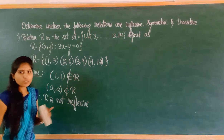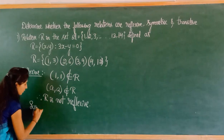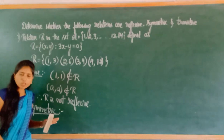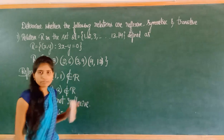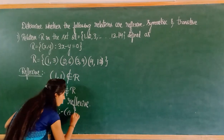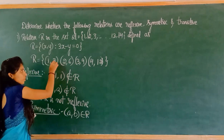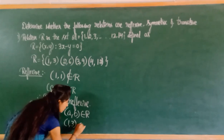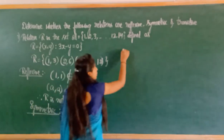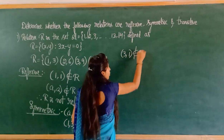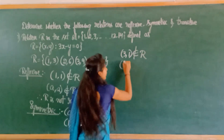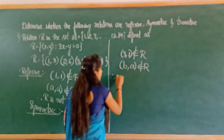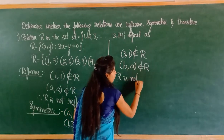Next, we check for symmetric. For symmetric, if (a, b) belongs to R, then (b, a) should also belong to R. Here, (1, 3) belongs to this relation, but (3, 1) does not belong to R. Therefore, (b, a) does not belong to R, and so R is not symmetric.